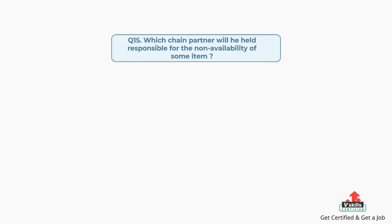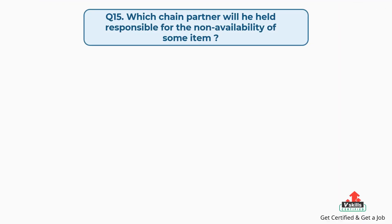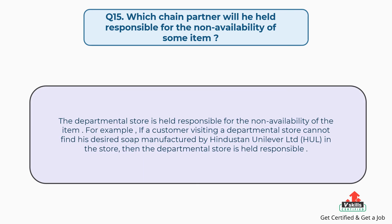Question number fifteen: which chain partner will be held responsible for the non-availability of some item? The answer is the departmental store is held responsible for the non-availability of the item. For example, if a customer visiting a departmental store cannot find his desired soap manufactured by Hindustan Unilever Ltd. in the store, then the departmental store is held responsible.